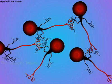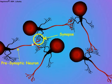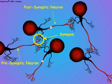A synapse consists of a presynaptic neuron that brings in the information signal, the synaptic junction where the information is transferred from the presynaptic axon to the dendrite of a postsynaptic neuron, and the postsynaptic axon that carries the information away to other neurons.